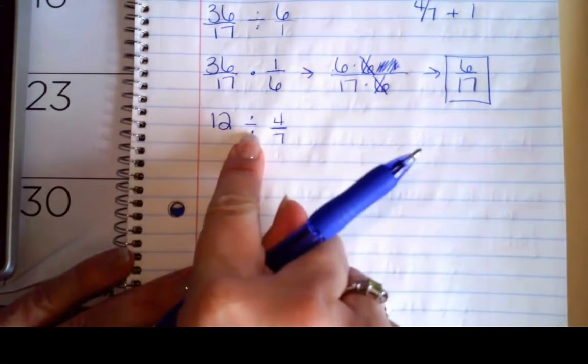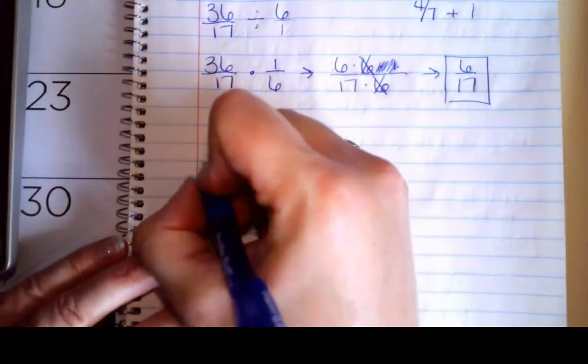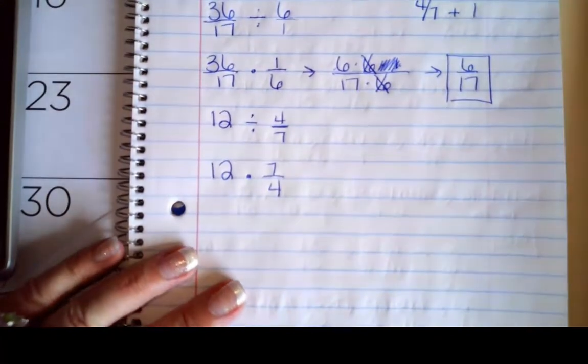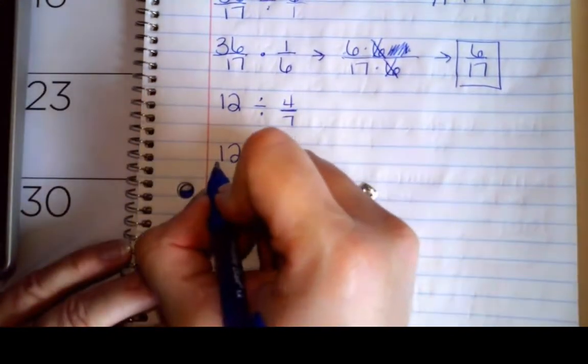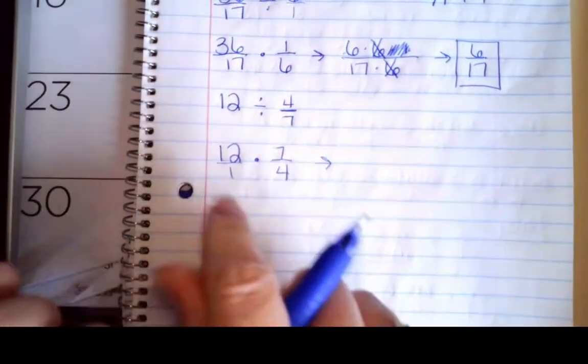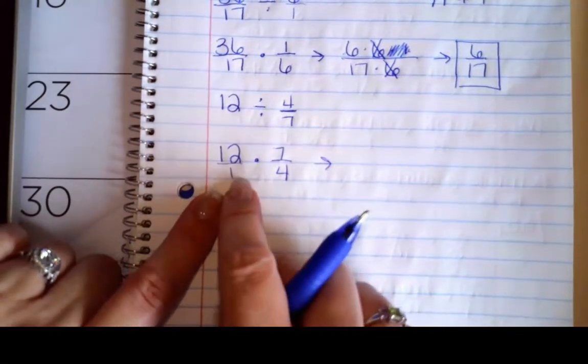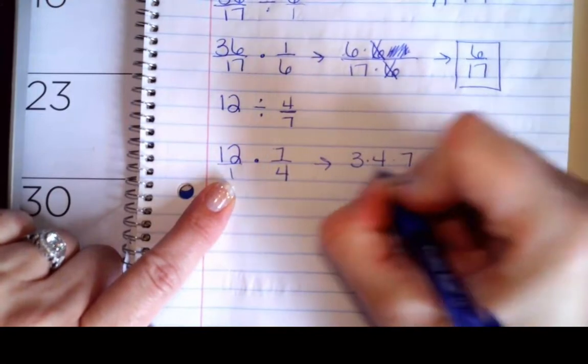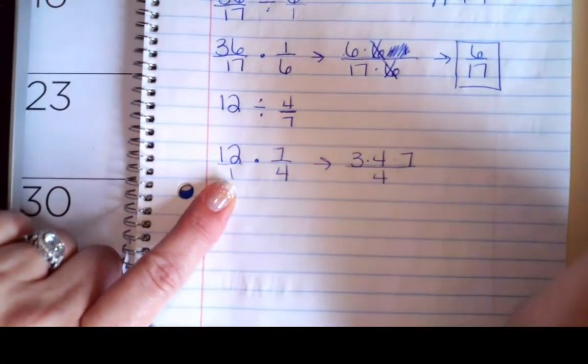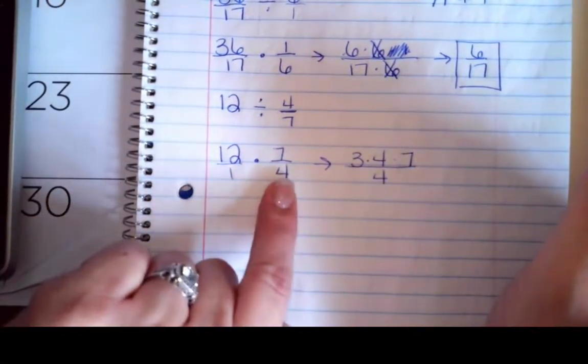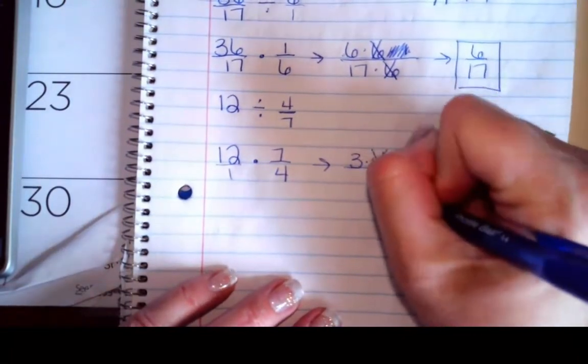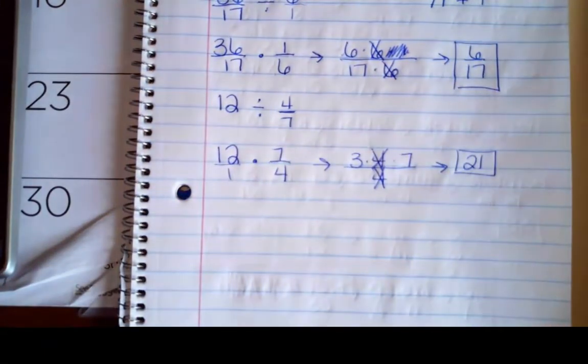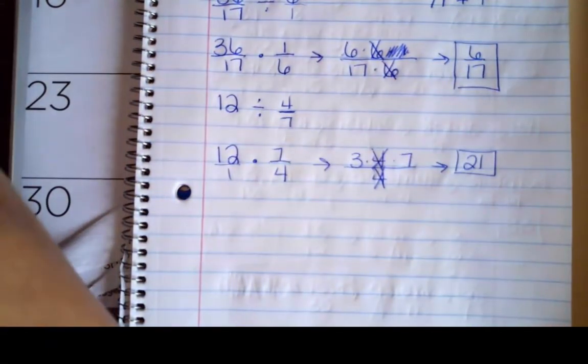So the first thing I notice is I've got division. So I'm going to change that to multiplication times the reciprocal. So I'm going to flip my second fraction. Well, I need to go straight across the top and straight across the bottom. So I'm going to put 12 over 1. 12 can be rewritten as 3 times 4, and then my denominator is just 1 times 4. So any number divided by itself. So that gives me 21 in my numerator, which is 21 over 1.